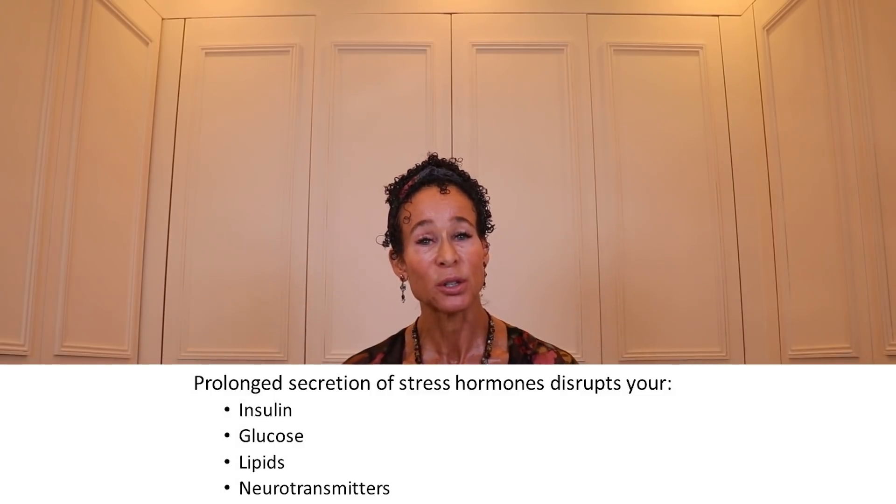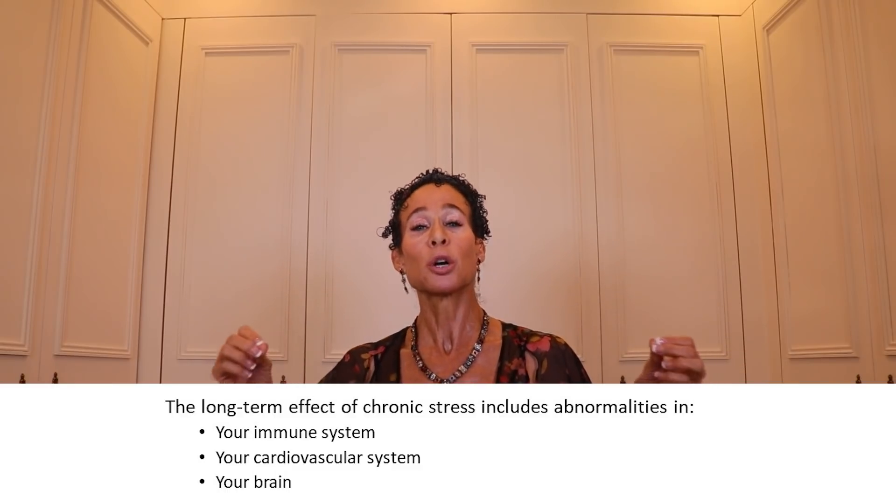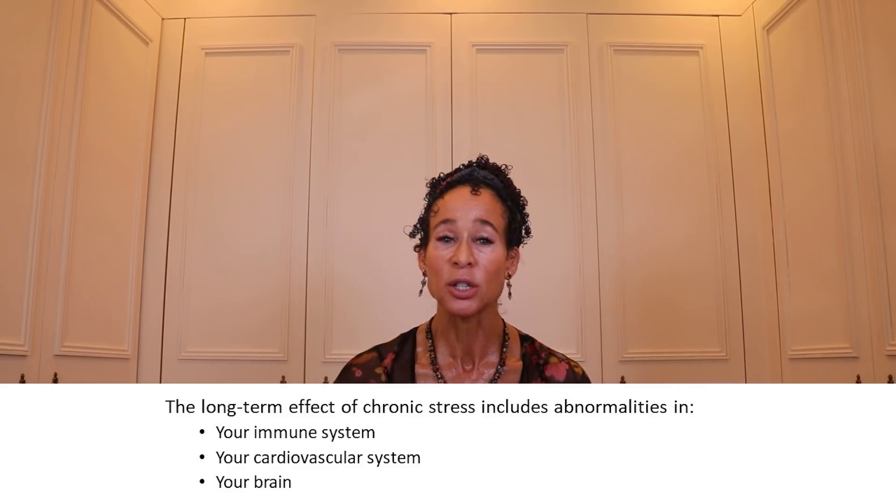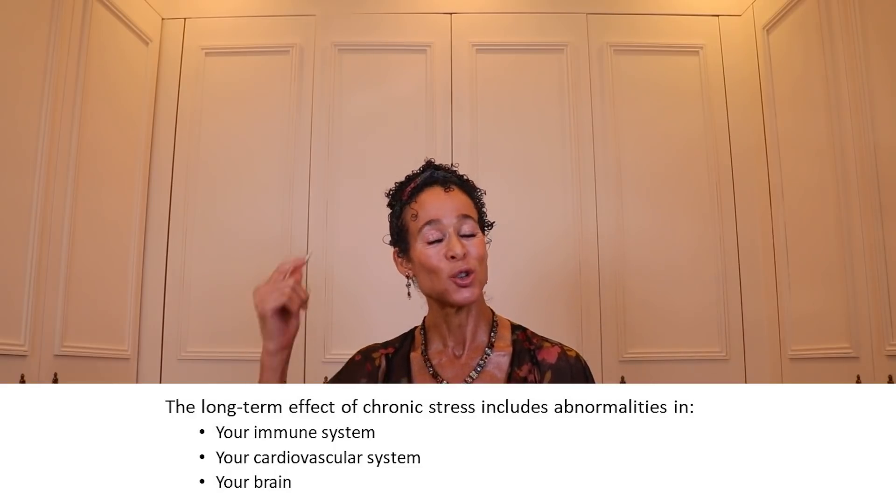Prolonged secretion of stress hormones disrupts your insulin, glucose, lipids, and neurotransmitters. Disruption of those four substances causes whole systems in your body to either malfunction or shut down. The long-term effect of chronic stress includes abnormalities in your immune system, your cardiovascular system, and your brain. Your body's production of the two stress hormones is affected by genes, environment, and experience early in life, so your normal levels may be higher or lower depending on your childhood experiences.